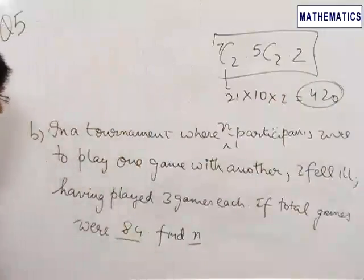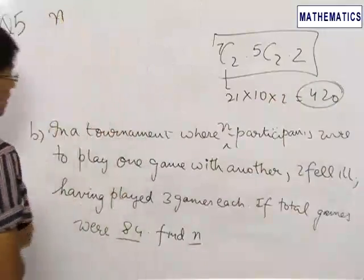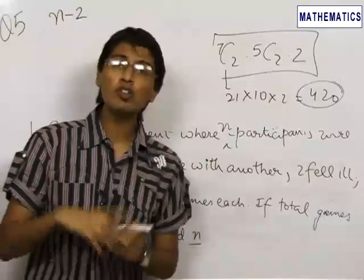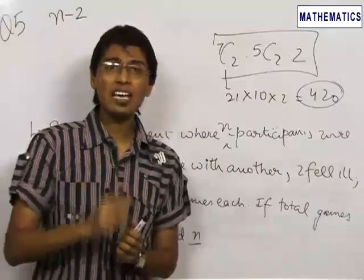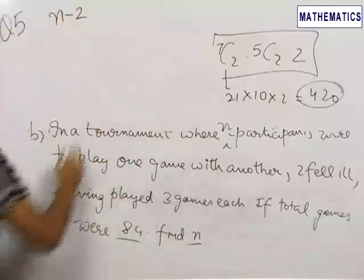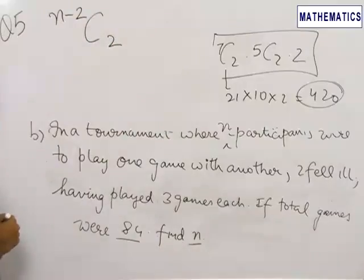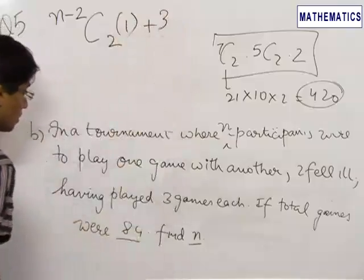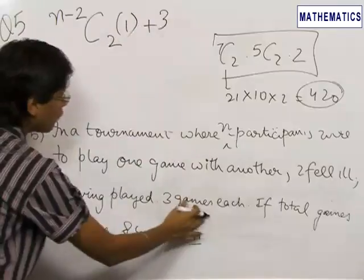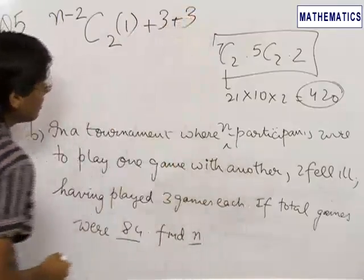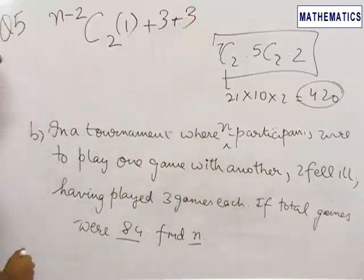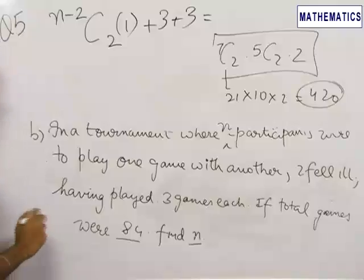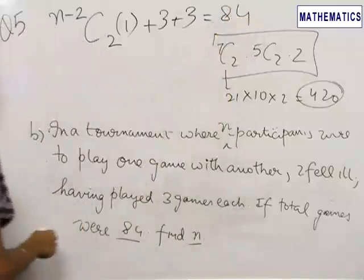For the second part, we have N participants and two of the participants fell ill. So we are left with N minus 2 participants and we know that if out of these N minus 2 participants, if we select two participants, we can have one game. So N minus 2 C2 into 1 plus 3 games, which first person played before falling ill and plus 3, which is the number of games that the second participant played before falling ill. So this is the total number of games played by all the participants at the end of the tournament and this is given equal to 84.